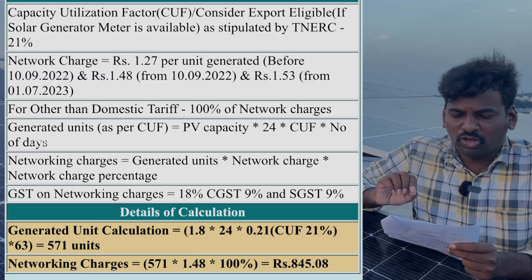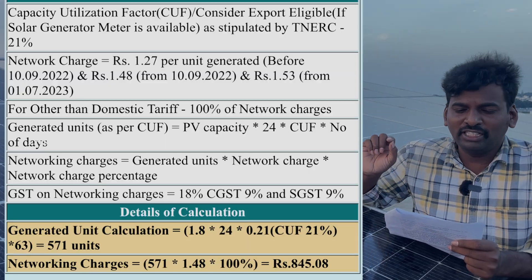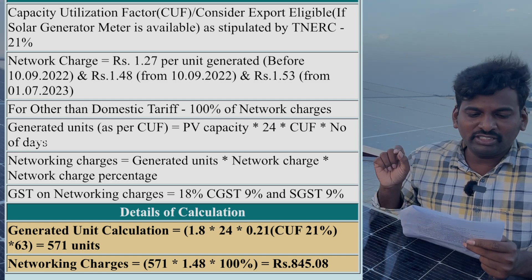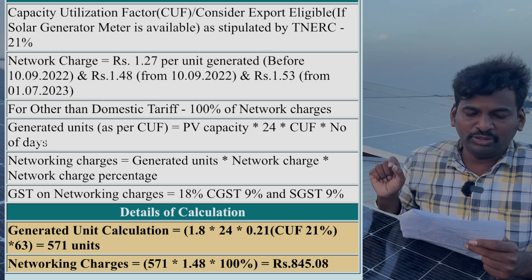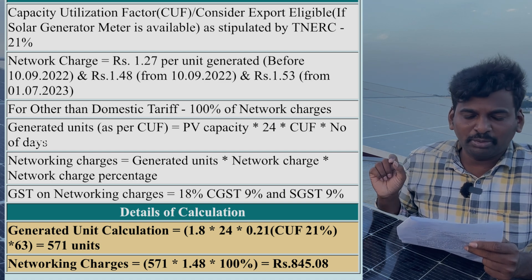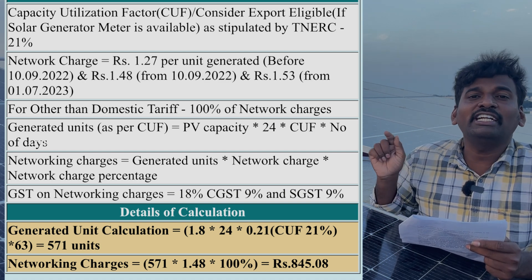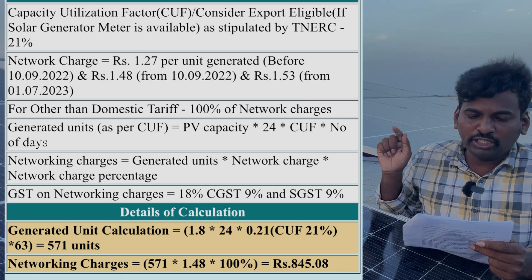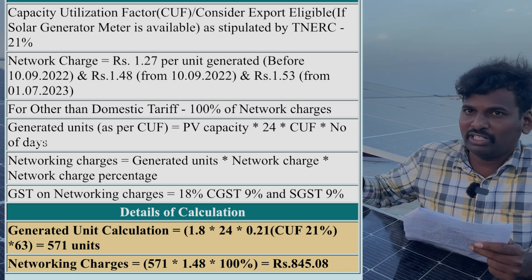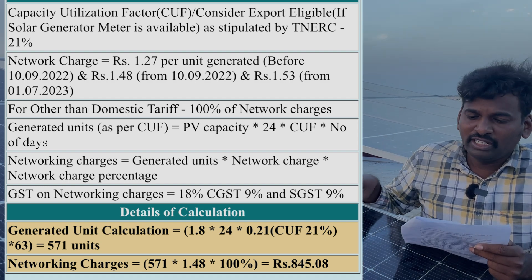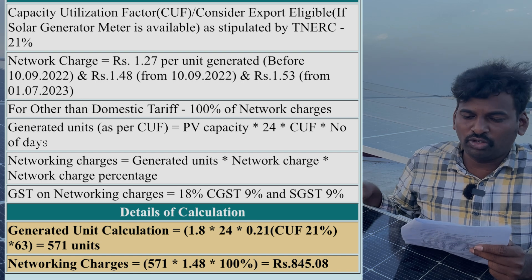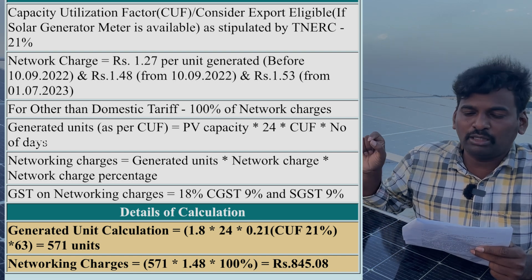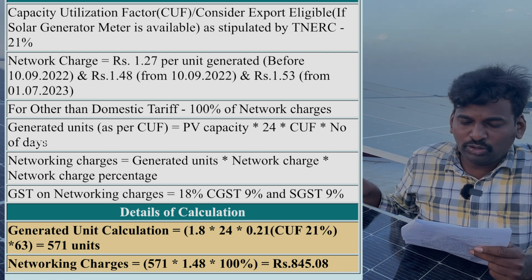In the next section, we will go to the current formula. Network charges are based on generated units. We apply the formula: Generated units equal to PV capacity — that is the solar panel — into 24 hours, into CUF (Cumulative Utilization Factor), into number of days.